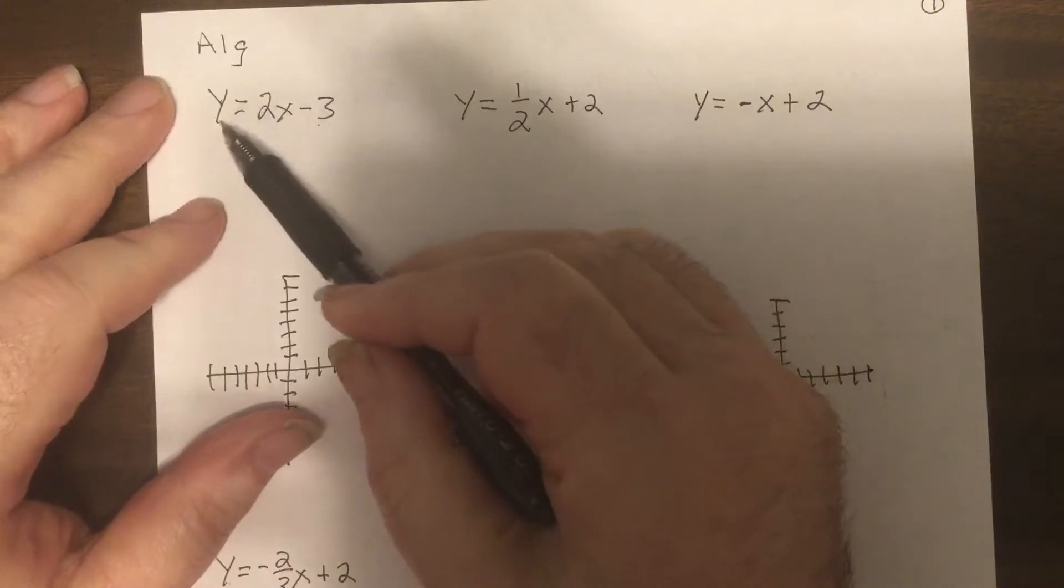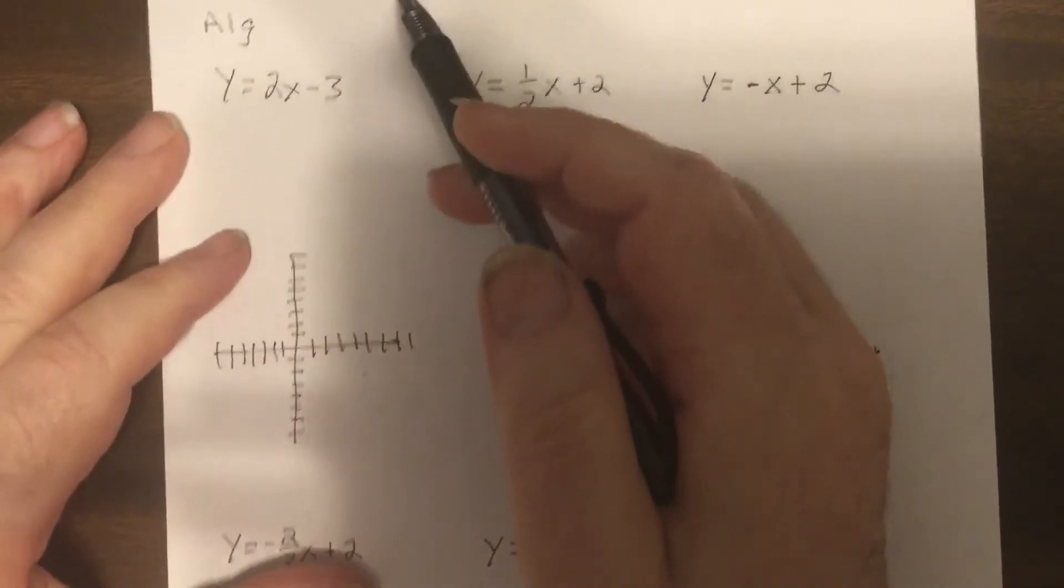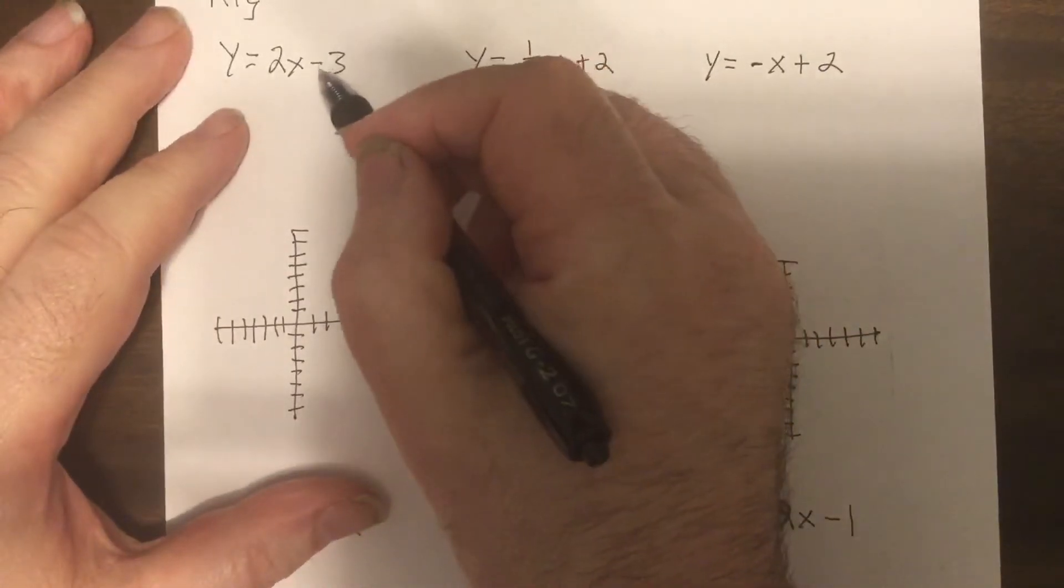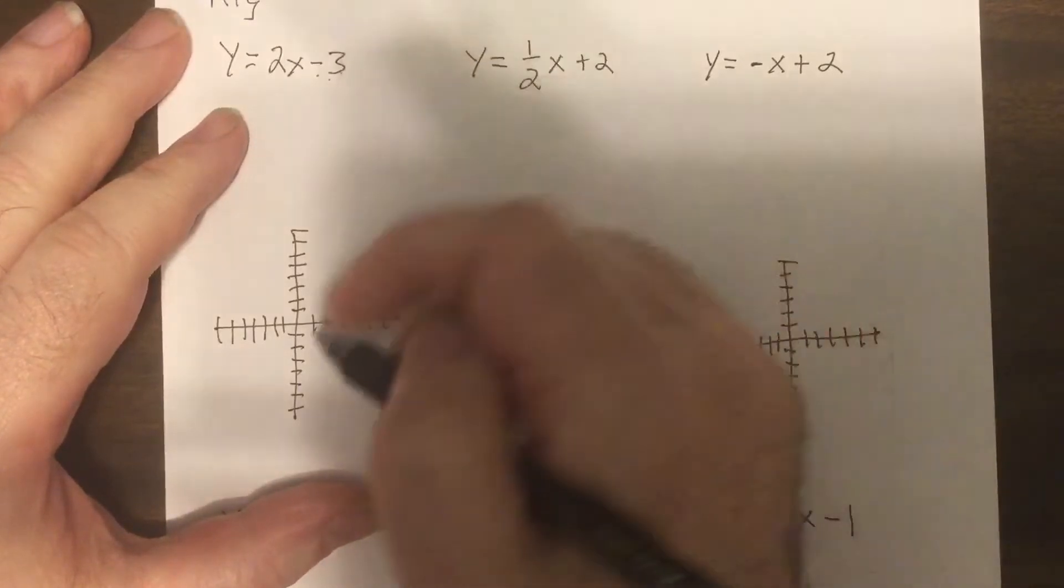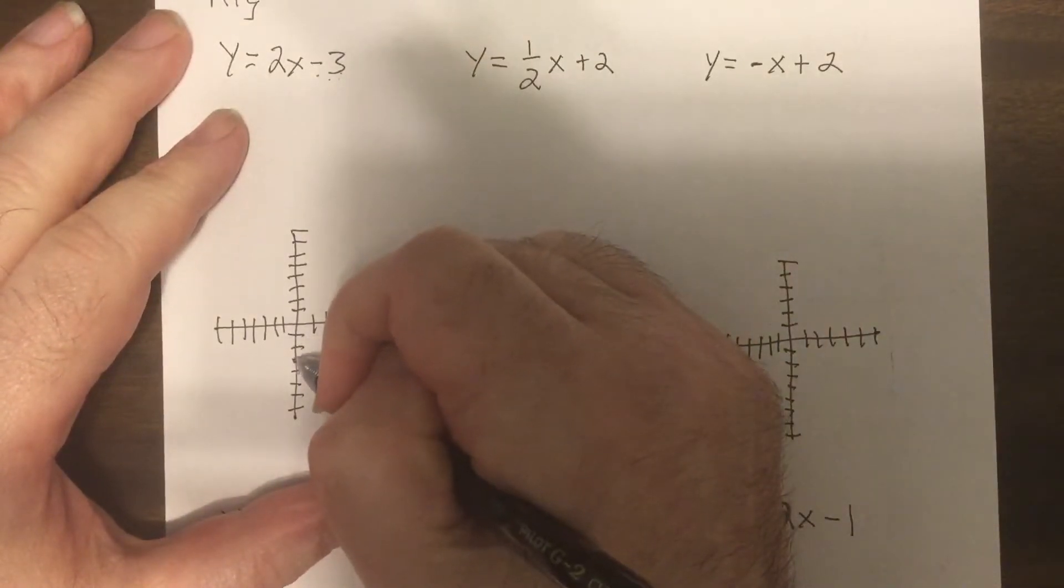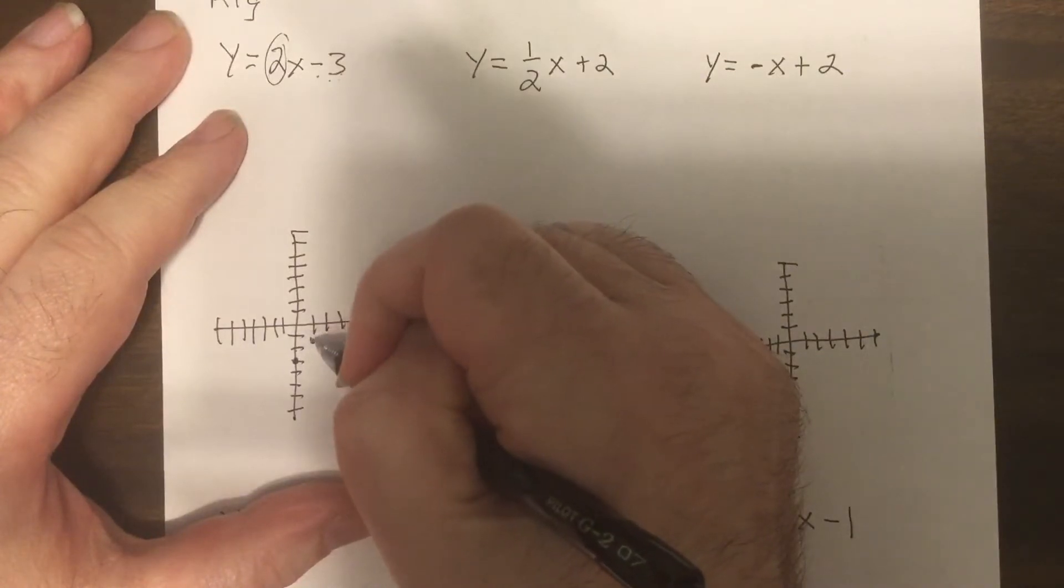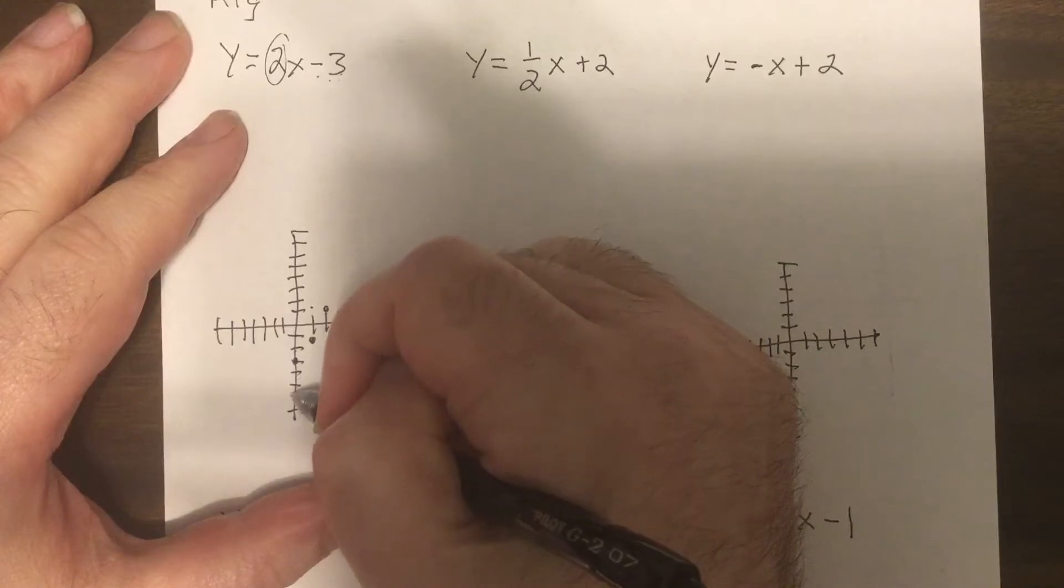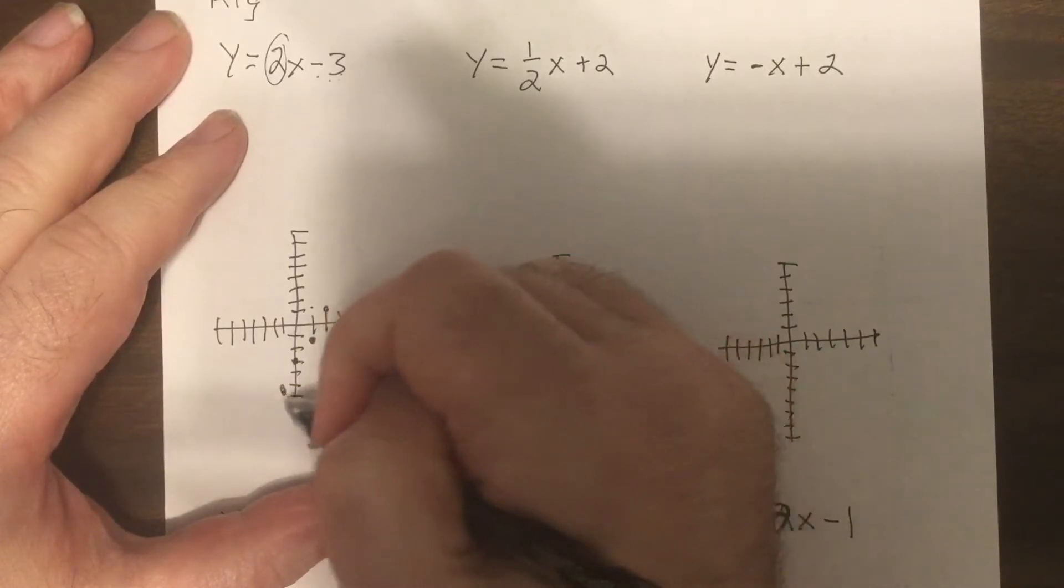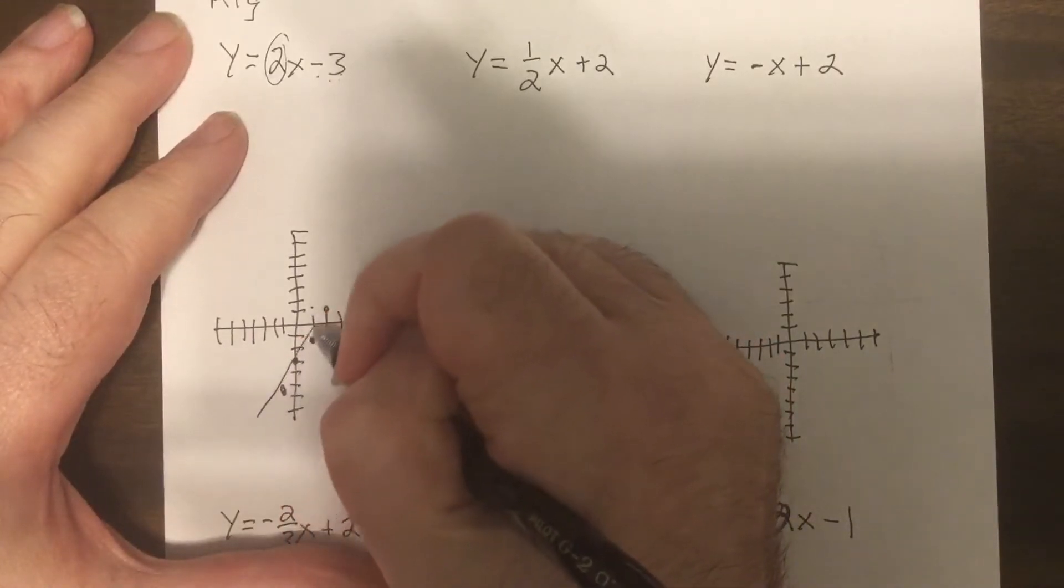I think it's so much easier. So negative three is your y-intercept, put a dot at negative three. The slope is two, so it'd be up two right one, up two right one, or you could go down two left one if you wanted to. Wow I didn't hit a single point there.